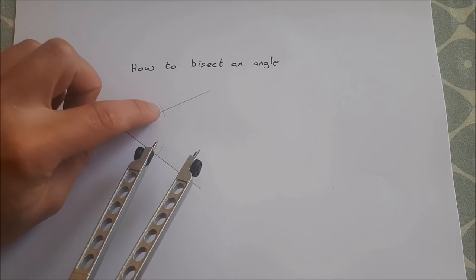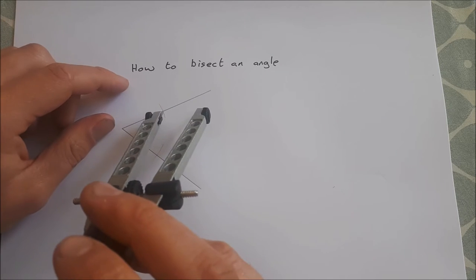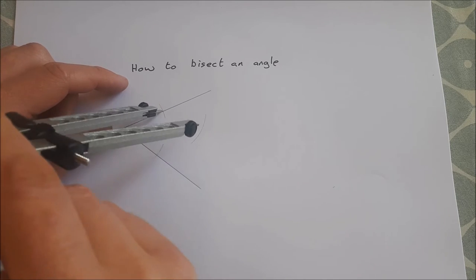Then what you do is you put the point of your compass at the point of intersection here of the arc and the arm. We scribe another arc and this time it's in the middle of the angle.